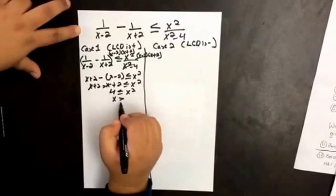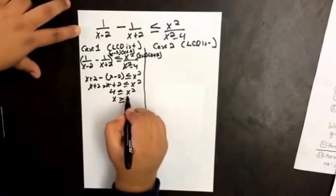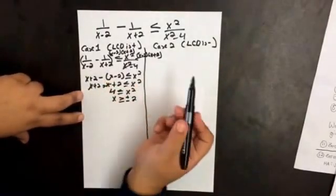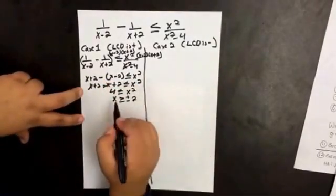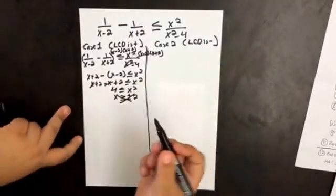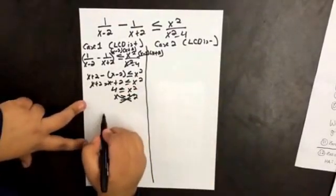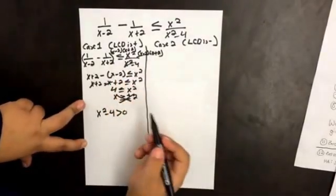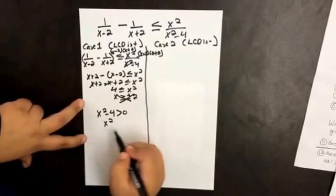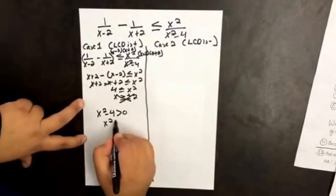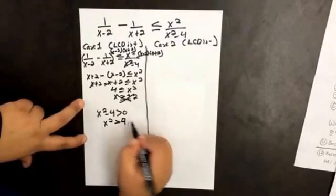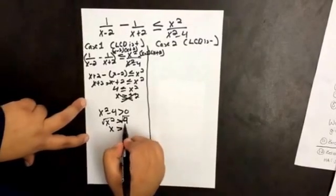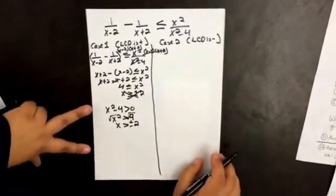If you go back to the inequality, x equals plus or minus 2 is going to make the inequality undefined, so those values will not work. So what if we set the denominator greater than 0 because it's positive? So then we're saying that x squared minus 4 is greater than 0, meaning x is greater than plus or minus 2.